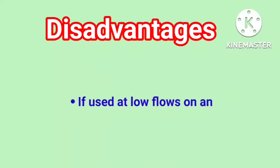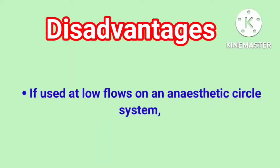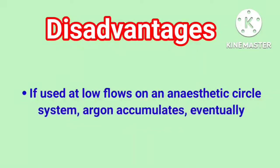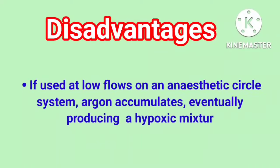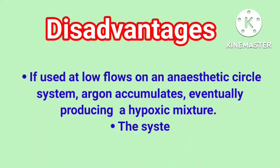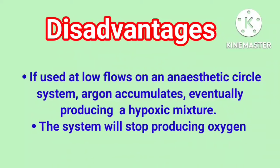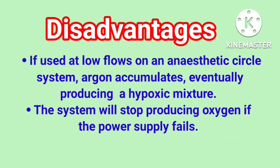If used at low flows on an anesthetic circle system, argon accumulates, eventually producing a hypoxic mixture. The system will also stop producing oxygen if the power supply fails.